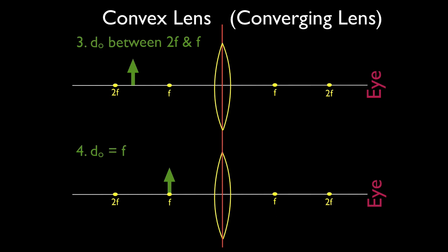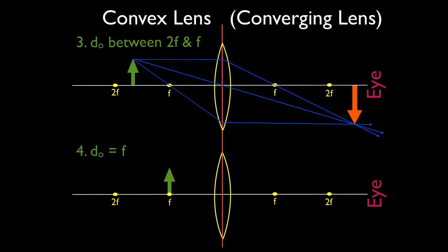Now we've moved the object a little closer — it's between F and 2f. We draw parallel-F, then F-parallel, then straight through the center, and there's our image. The image is going to be beyond 2f. So when the object is between F and 2f, the image is always greater than 2f away from the lens. The image will always be bigger — first it was smaller, then the same size, and now it's magnified. But it will always be inverted and always a real image.